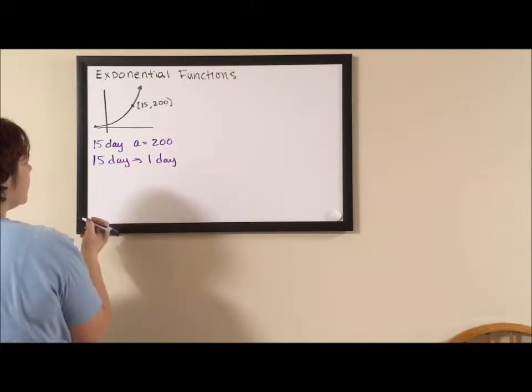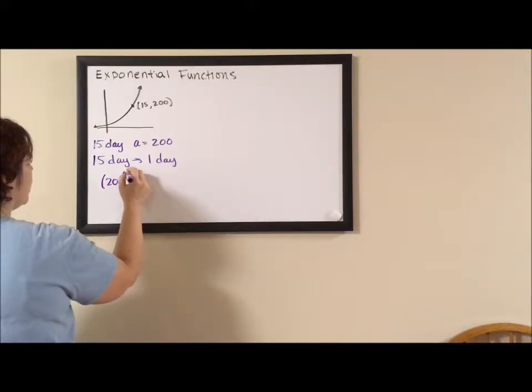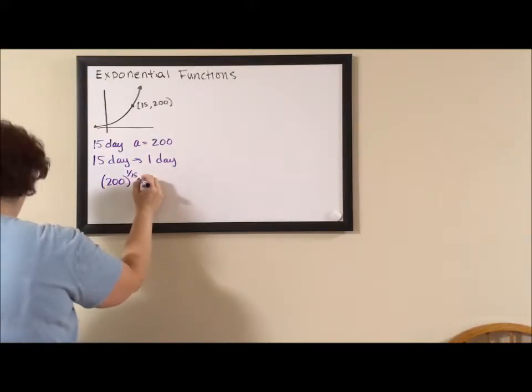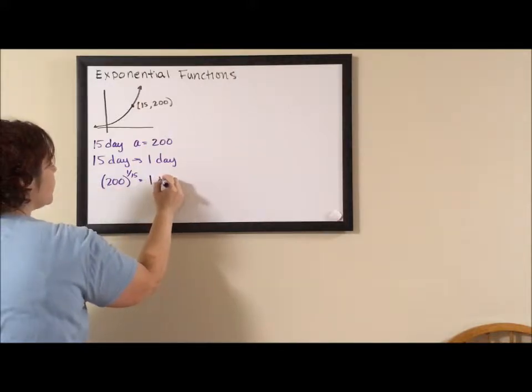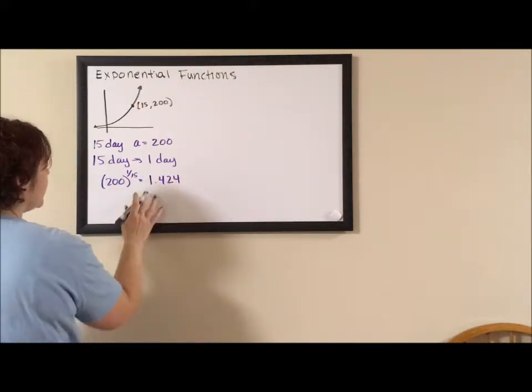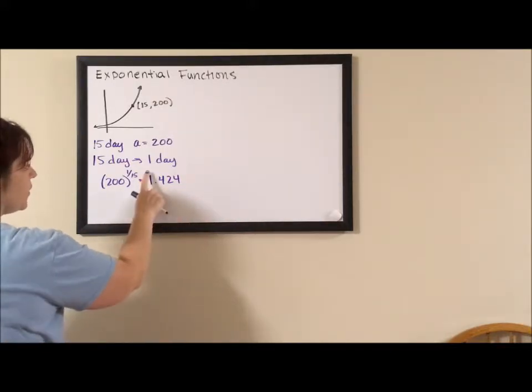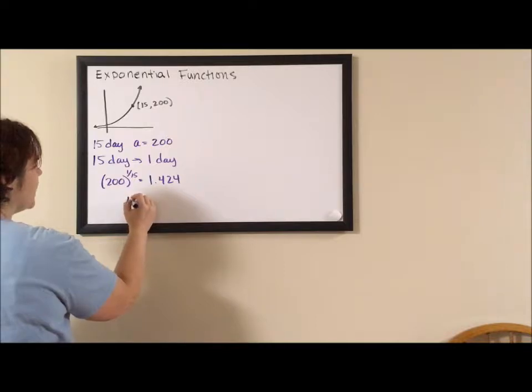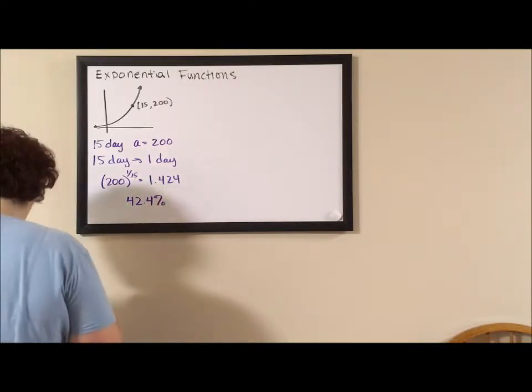So we are going to take this and say 200 to the 1 over 15, which is going to give us the number 1.424. And then to get the growth rate we subtract 1 and multiply by 100. So we subtract 1, multiply by 100 - it's 42.4% growth rate per day.